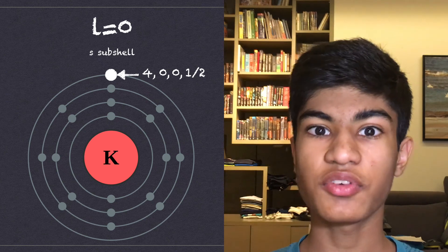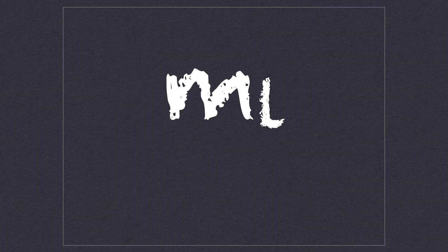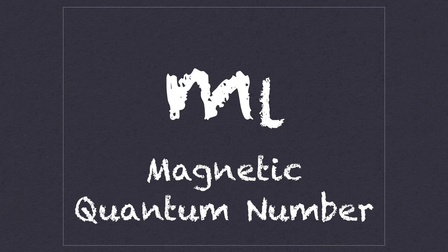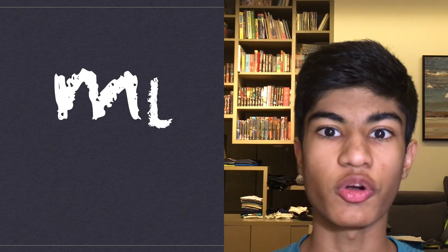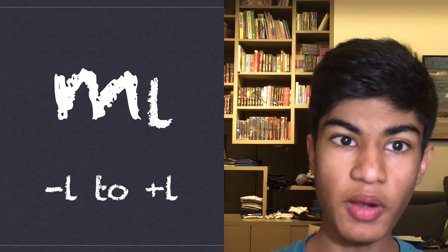Each subshell is then further divided into orbitals, bringing us to the third quantum number, ML, or the magnetic quantum number. The magnetic quantum number tells us which orbital an electron is in. Its values can range from minus L to plus L.